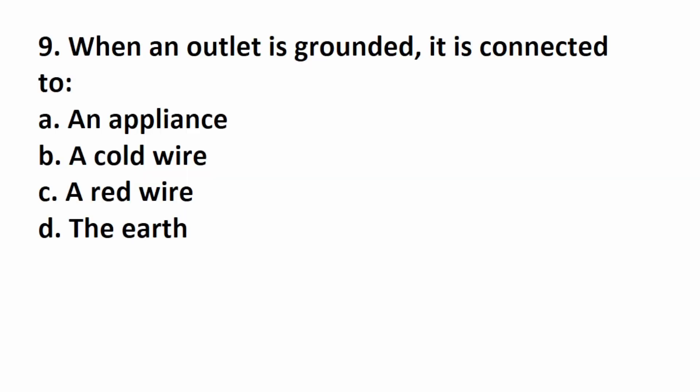Number nine says, when an outlet is grounded, it is connected to. What does it mean for something to be grounded? Let's talk about that. Grounding is used to protect things from being damaged by electricity. It's done by literally giving electricity a safe path to the ground. So this one is going to be D. Grounding protects things from being damaged by electricity by giving electricity a safe path to the ground. So this one is D.